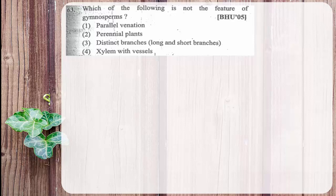Which of the following is not a feature of gymnosperms? The given options are: parallel venation, perennial plants, distinct branches such as both long and short, and xylem with vessels.